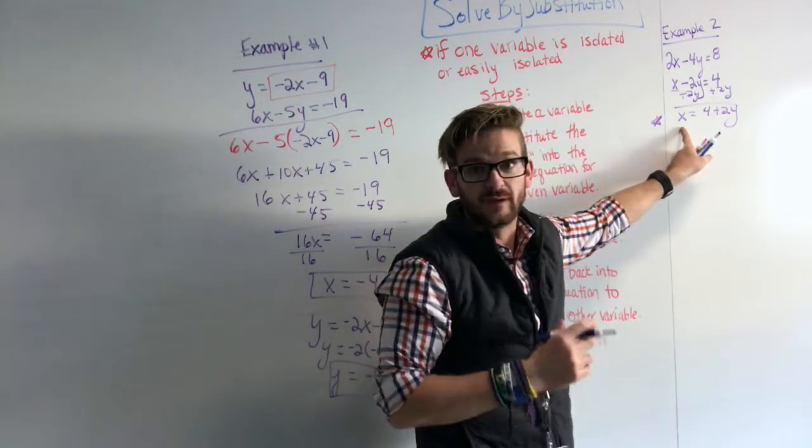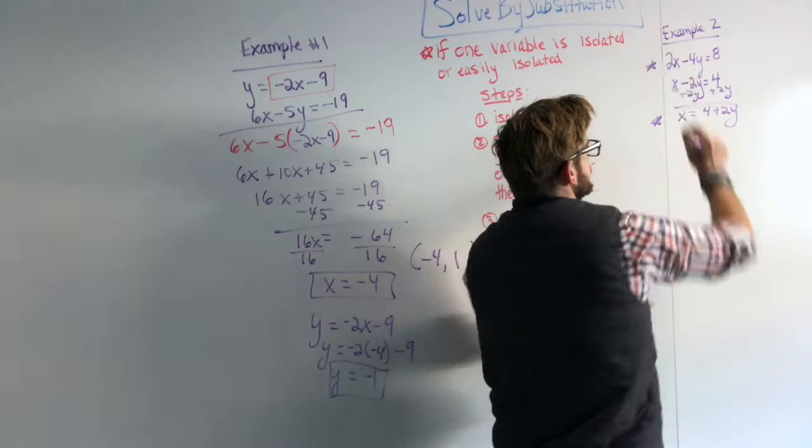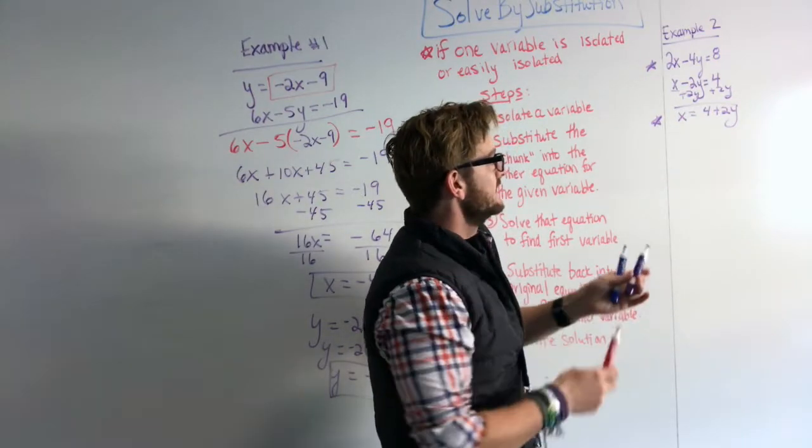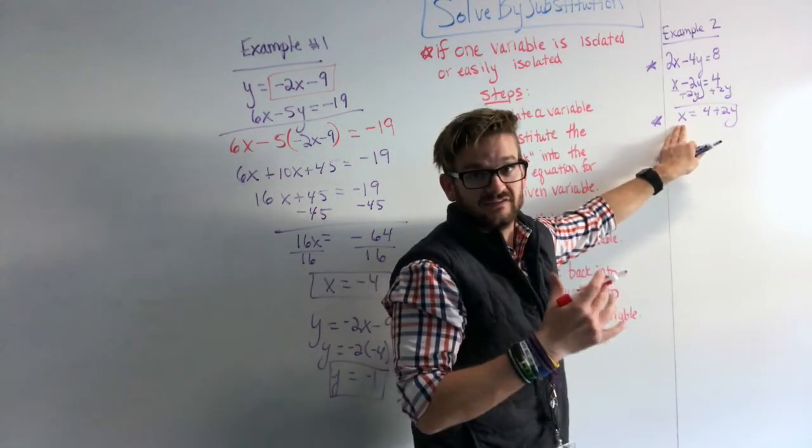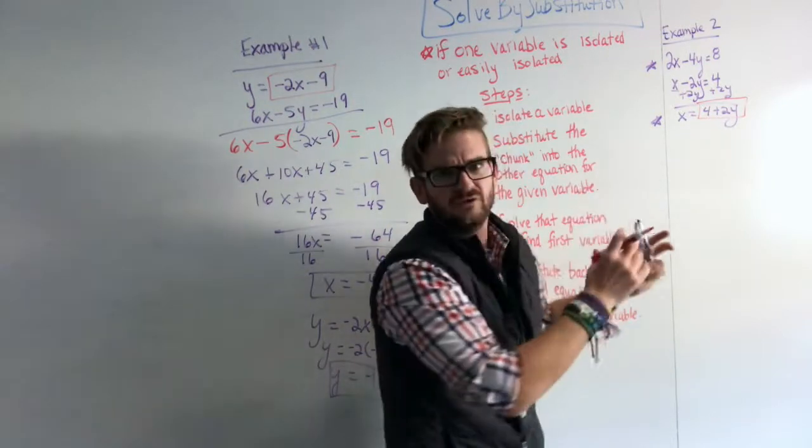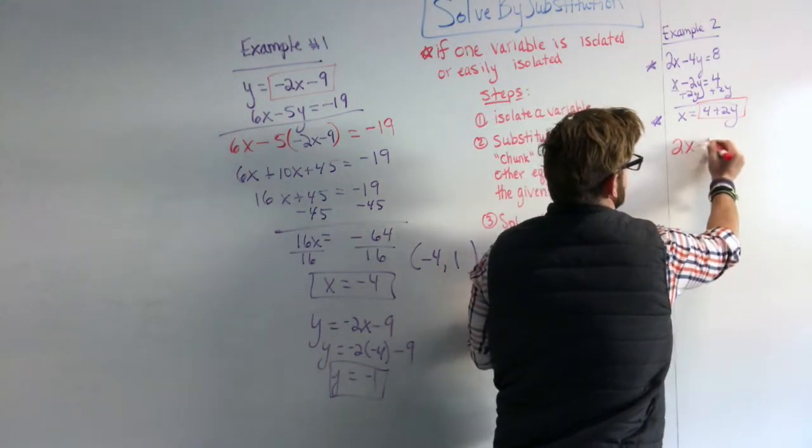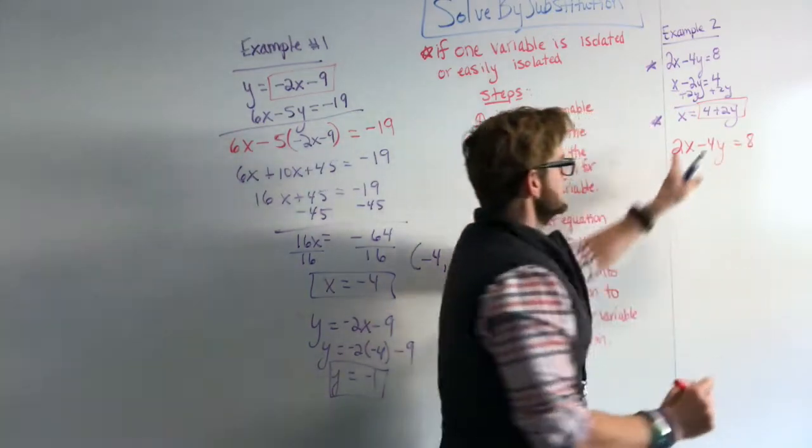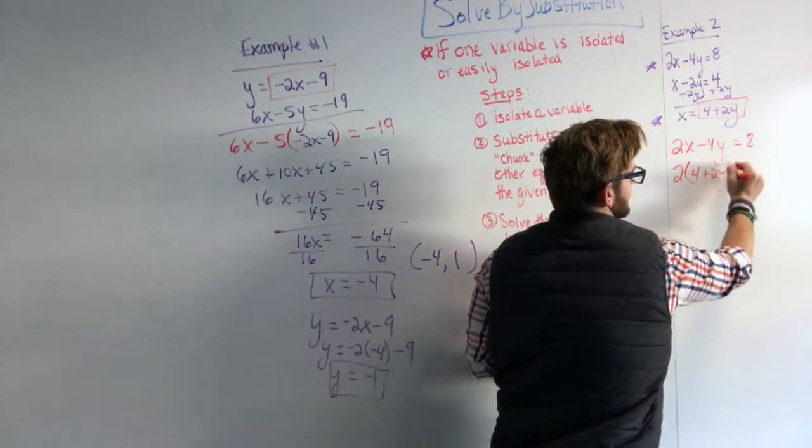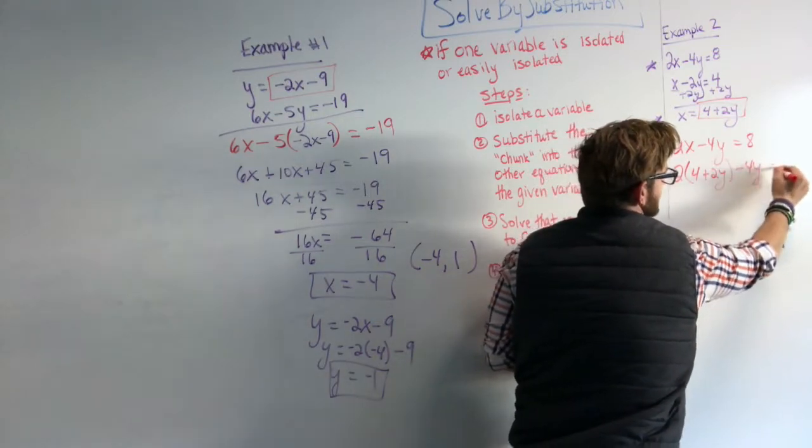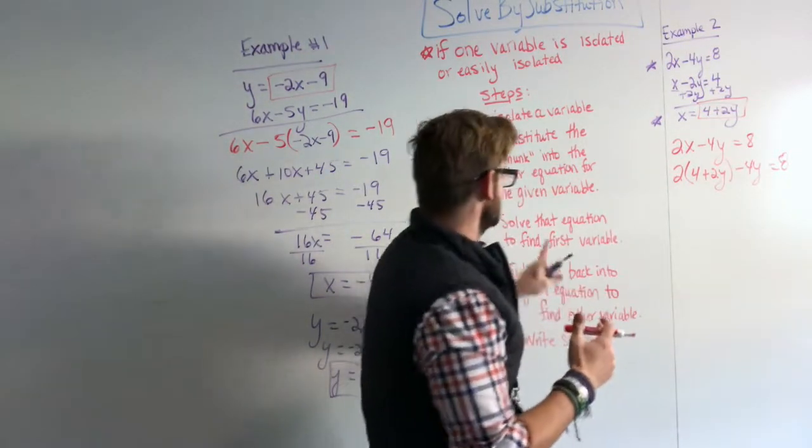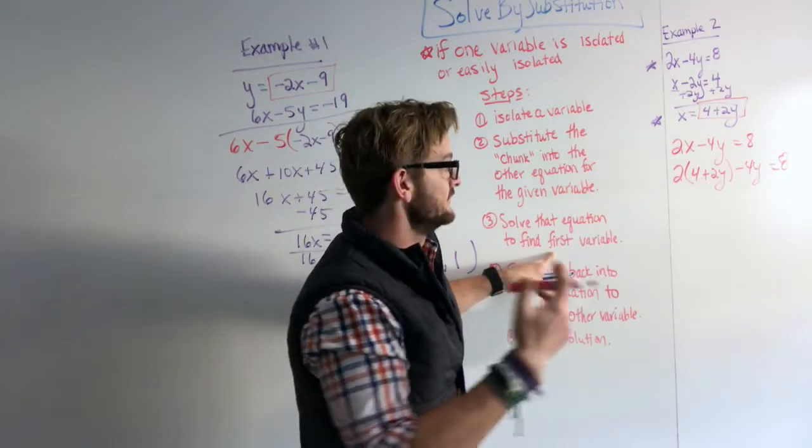That is my second equation, now just represented a little bit differently. This is my original first equation. These are the two equations that I'm working with. So I put a star next to them to indicate that. Now if you remember, now that we have a variable solved by itself, it's isolated, we can take that chunk, that piece, that is equivalent to that variable and substitute it into our other equation. Our other equation being 2x minus 4y equals 8. And instead of x, I'm going to substitute this whole chunk in, this whole piece. So 2 times x minus 4y is equal to 8. I'm going to follow the same process, I'm going to simplify it down.